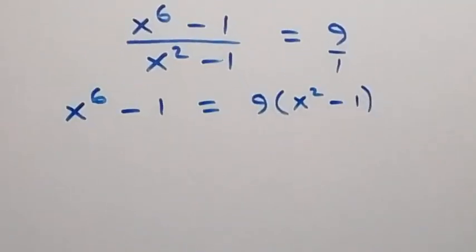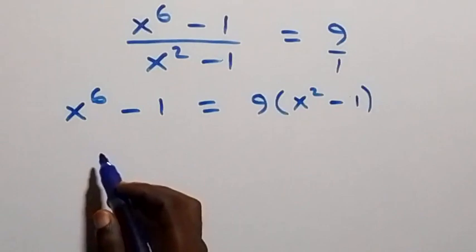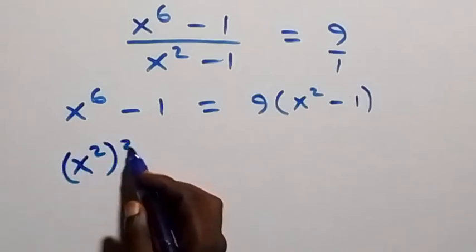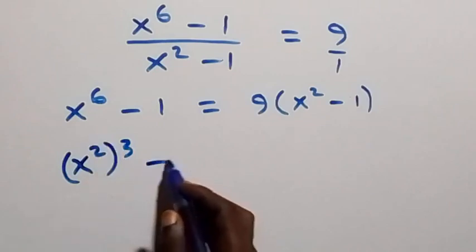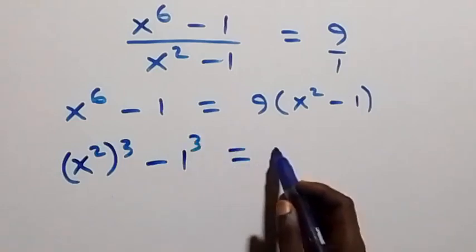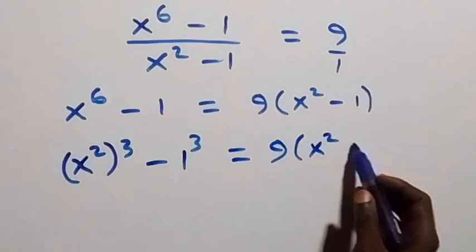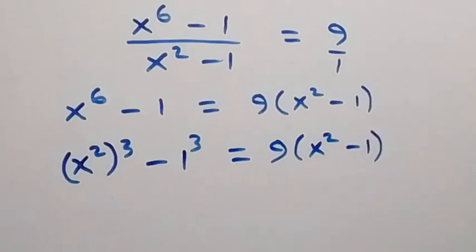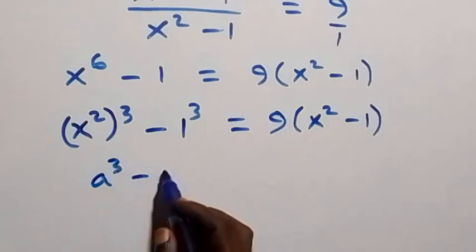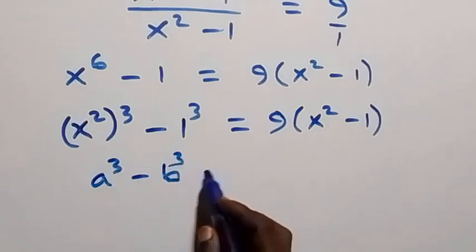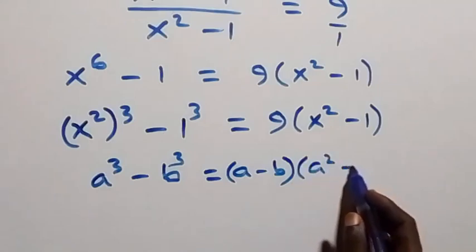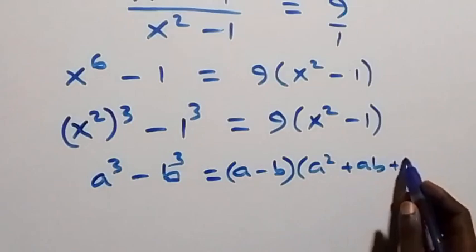Here we can write 6 as 2 times 3, so we have x² raised to the power 3 — this will still become x⁶ — then minus 1. And 1 can also be written as 1 raised to the power 3, then equals to 9 into bracket x² minus 1. This follows the difference of two cubes, that is a³ minus b³, which can be written as (a minus b)(a² plus ab plus b²).